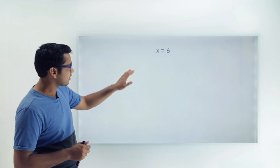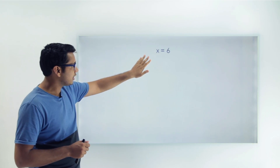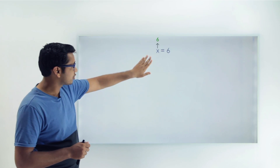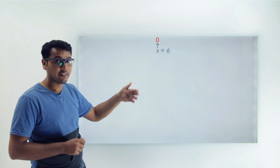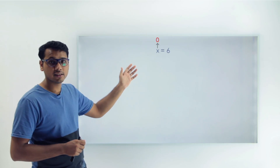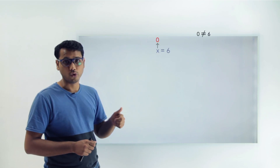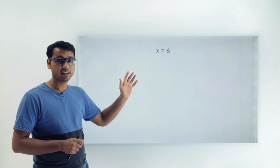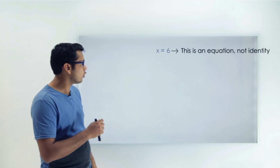Let's understand the meaning of it. If you consider an equation x equals to 6, is this equation true for all the values of x? This is true for x equals to 6. But if I take the value of x to be 0, is 0 equals to 6? No. So this equation is an equation only — it is not an identity because it is not true for all the values of x.